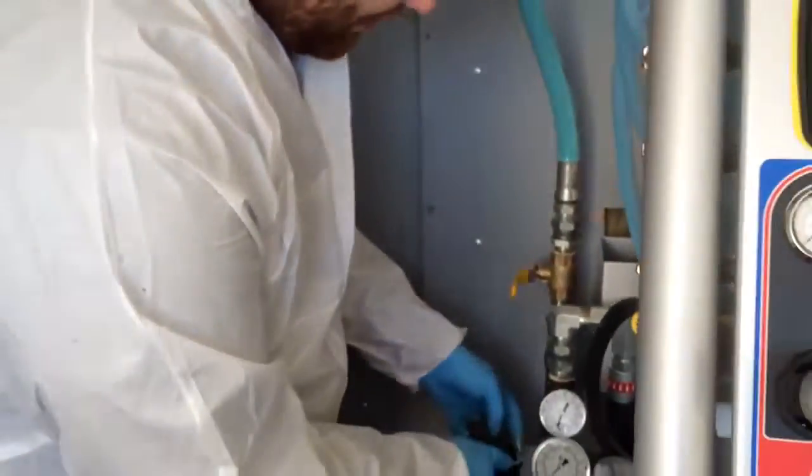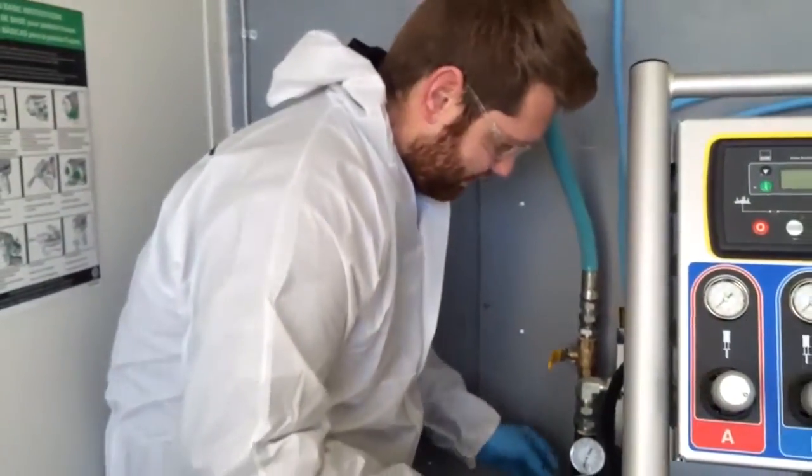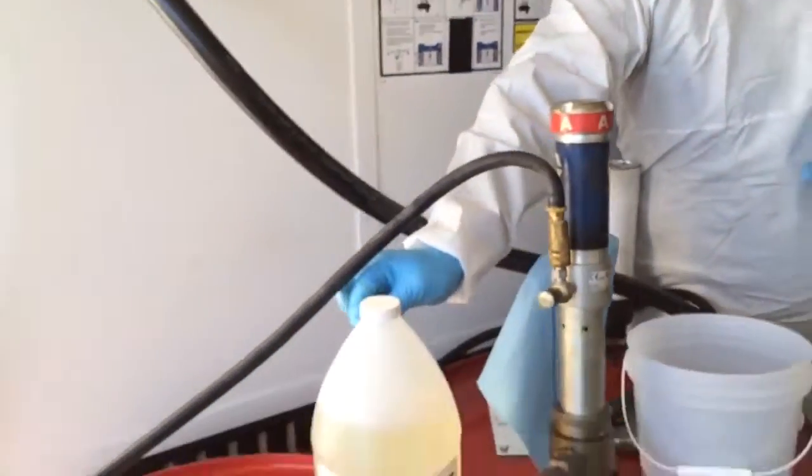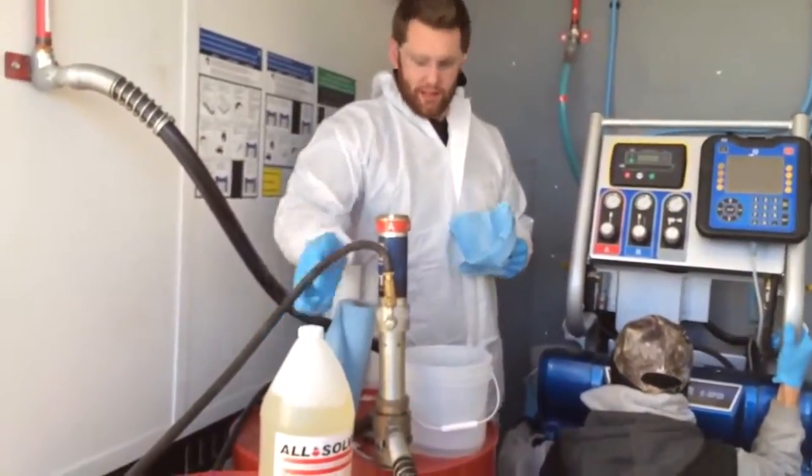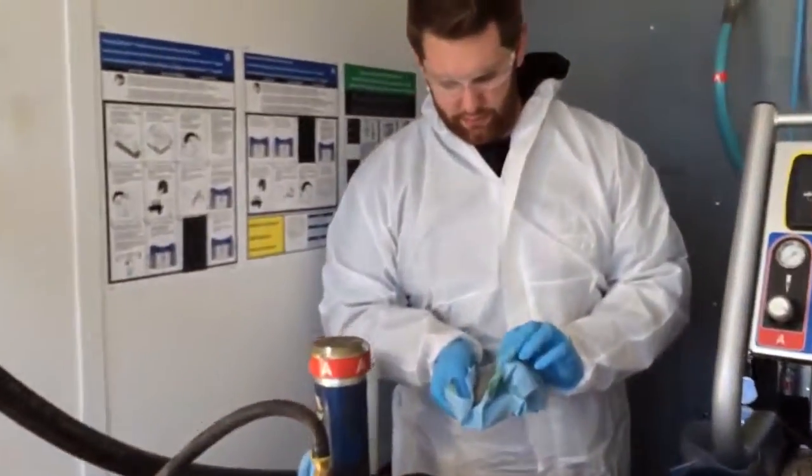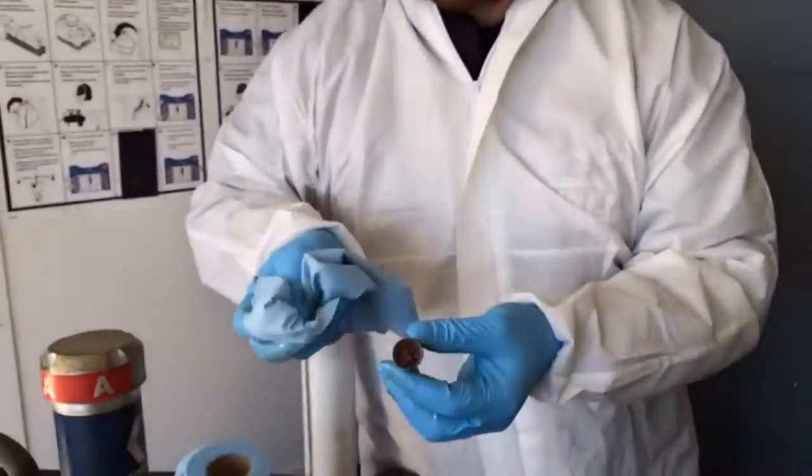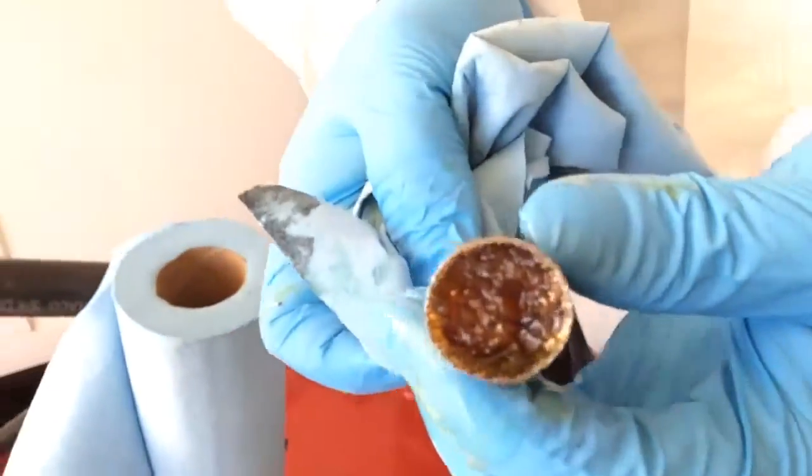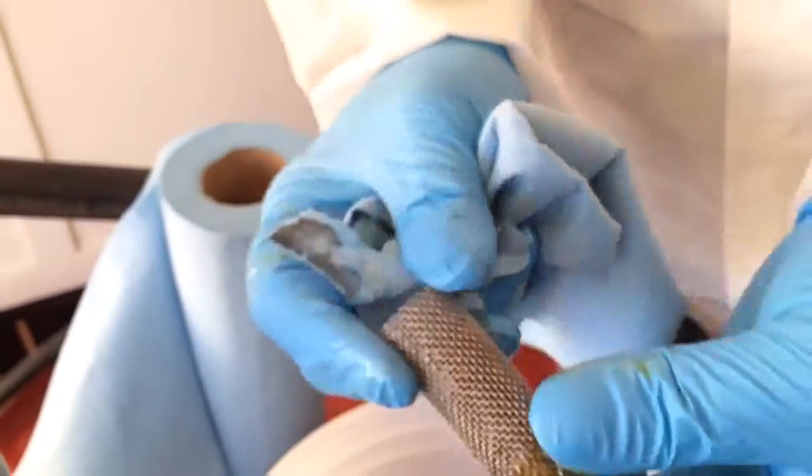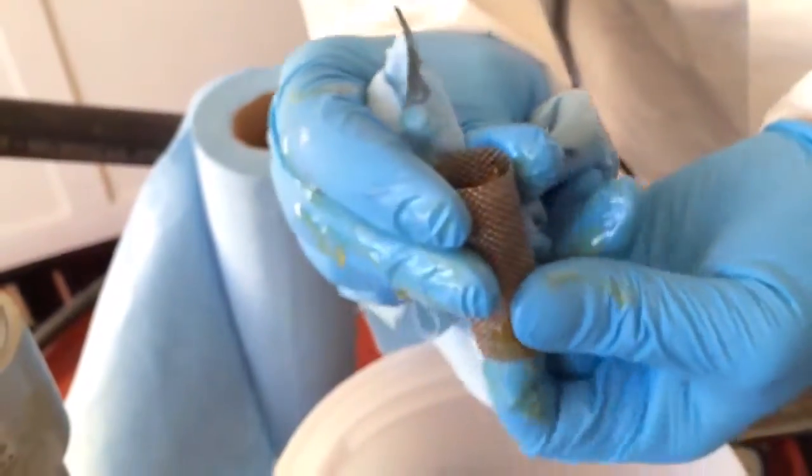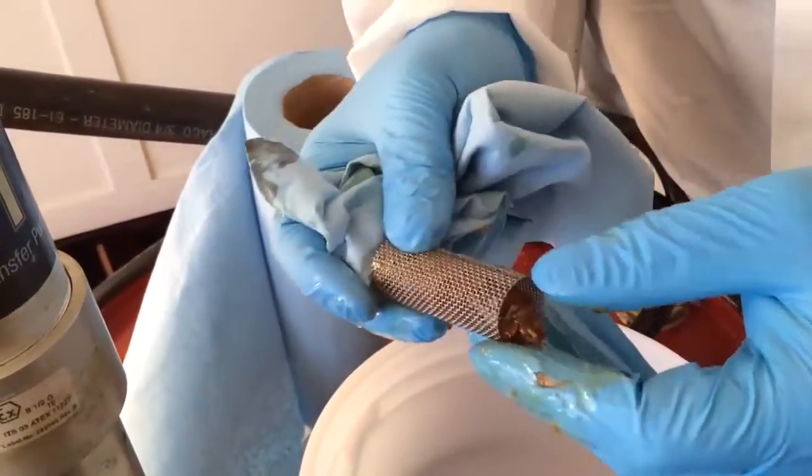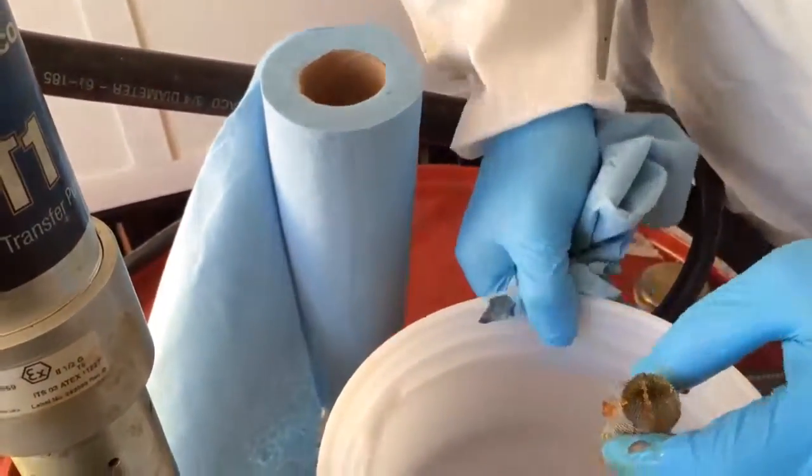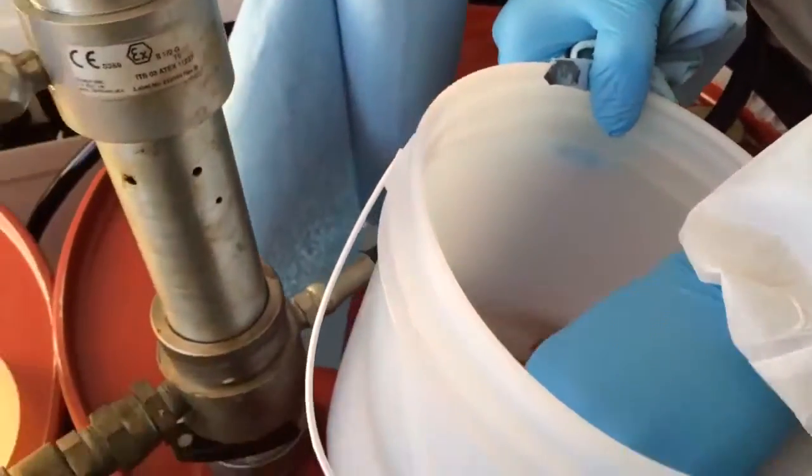To clean it, we use our product all-solve right here, designed to remove cured urethanes and polyureas. Here again, you can see all the stuff that's stuck inside that filter, all the grime and the tubes. Just pull that stuff out. This bucket here is full of all-solve. We're just going to give it a real nice rinse.